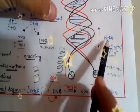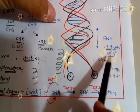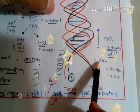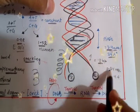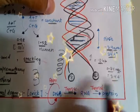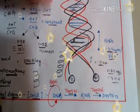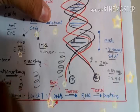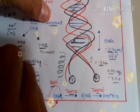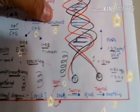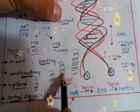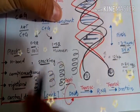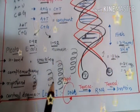So this particular phenomenon is known as central dogma, which is given by Crick. And you have to memorize this pitch, that is 3.4 nanometer or 34 angstrom, and the distance between two base pairs, that is 0.34 nanometer or 3.4 angstrom. This right-handed fashion is also known as plectonemically.